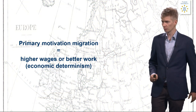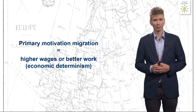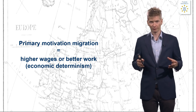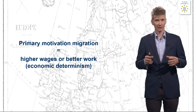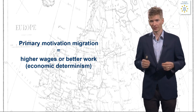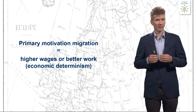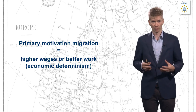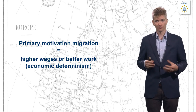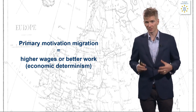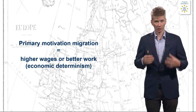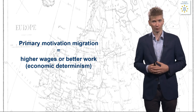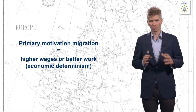Before diving into the different laws, it's important to be clear about their scope. Ernest Ravenstein indicated that the primary motivation for migration is generally always the economy — people move because of higher wages or better work. There is a certain economic determinism in his laws, so they explain economic migration well but are less apt for refugees or forced migration.